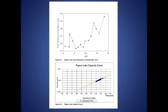This demonstrates the Pigeon Lake capacity curve — the levels on each sampling date over the course of the season, combined with the total phosphorus concentrations. You multiply the two together to get the overall phosphorus in kilograms in the lake, and you can calculate the change from day to day. On Pigeon Lake, phosphorus starts fairly low but does tend to increase over time.